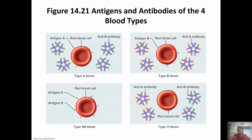Here's a picture: if you have the A antibody, you have the B antigen and you're type B. If you have no antibodies, you have both antigens, so you're type AB. If you have the B antibody, you have the A antigen and you're type A. If you have both antibodies, you don't have any antigen and you're type O. Remember: whatever your blood type is, that is the antigen you have. Whatever antigen you have, you have the opposite antibody — A antigen means B antibody, B antigen means A antibody, A and B antigens means no antibody, both antibodies means no antigens.